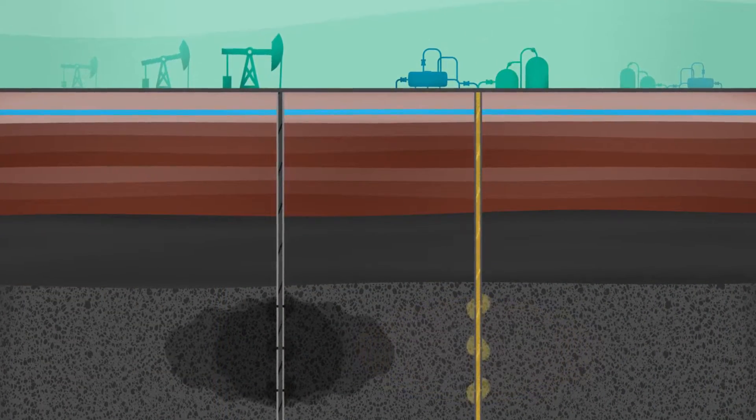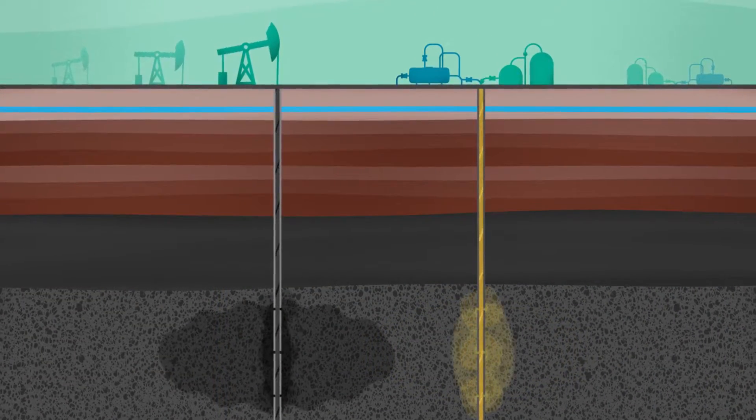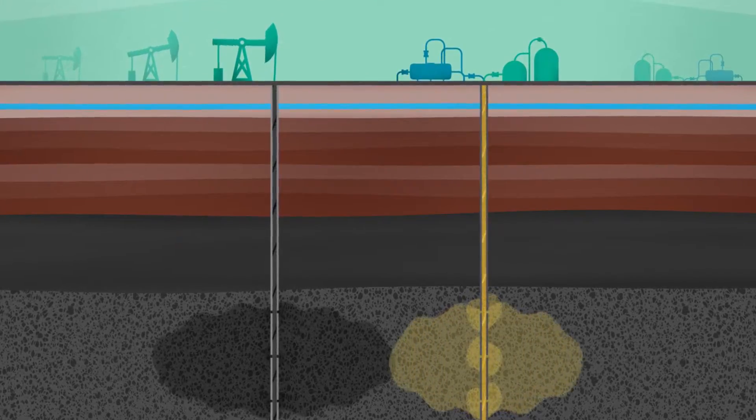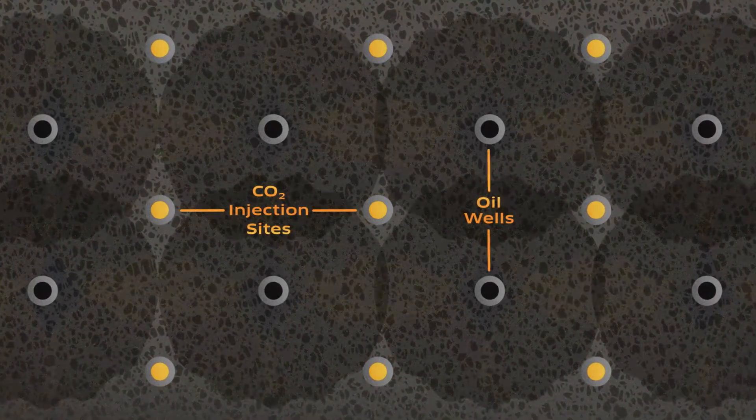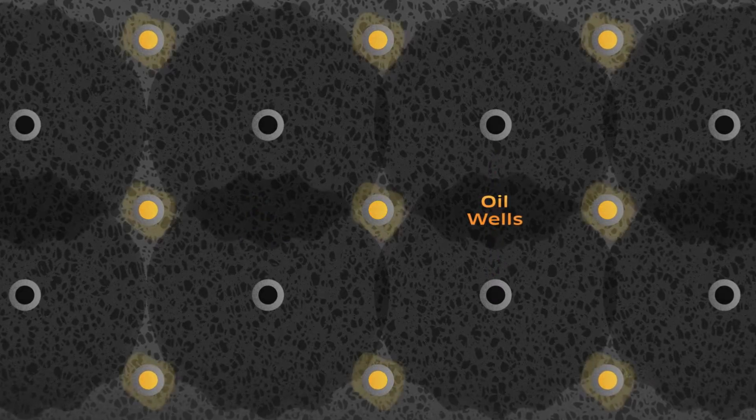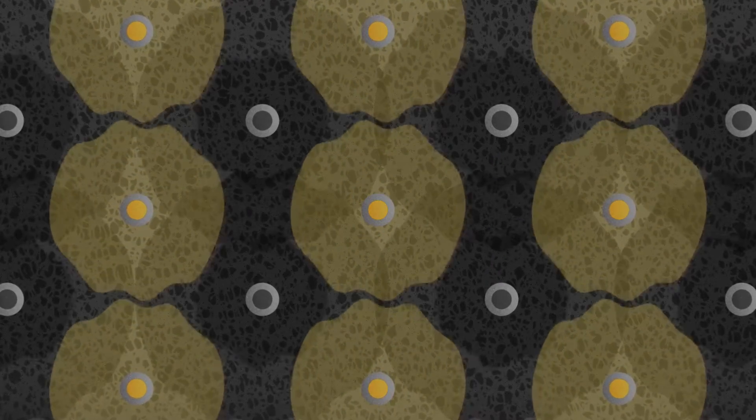Far below the surface, the injected liquid CO2 is used to push hydrocarbons towards oil-producing wells. In fact, these CO2 injection wells can be placed all around oil-producing wells in order to enhance the recovery process while trapping CO2 back underground where it came from.